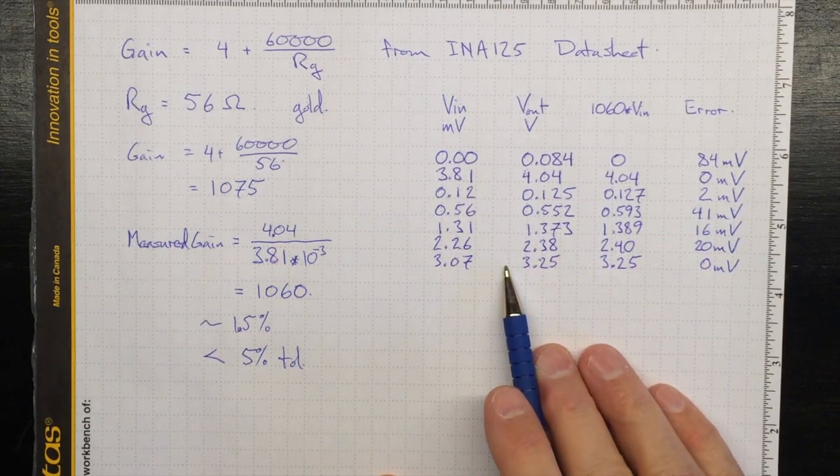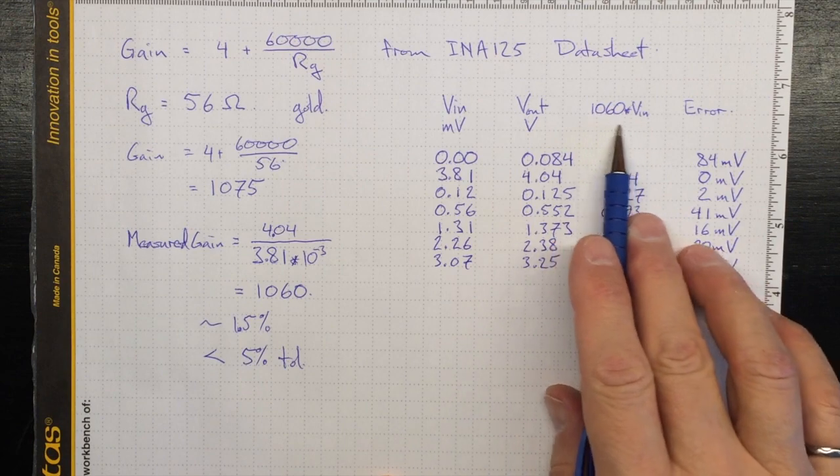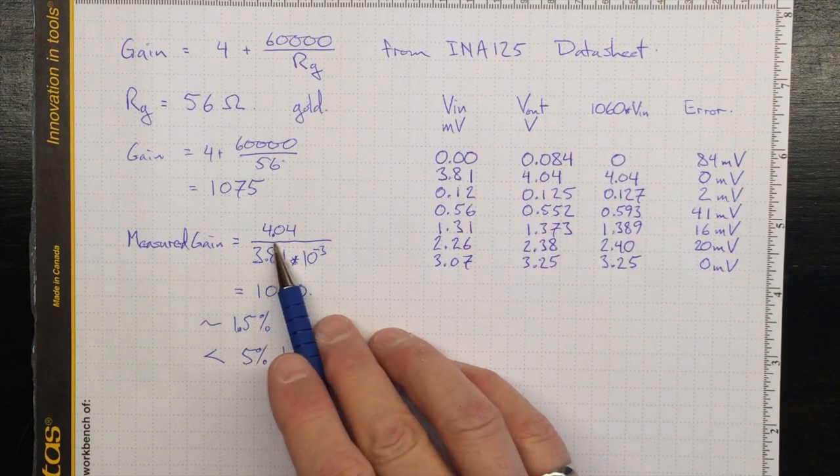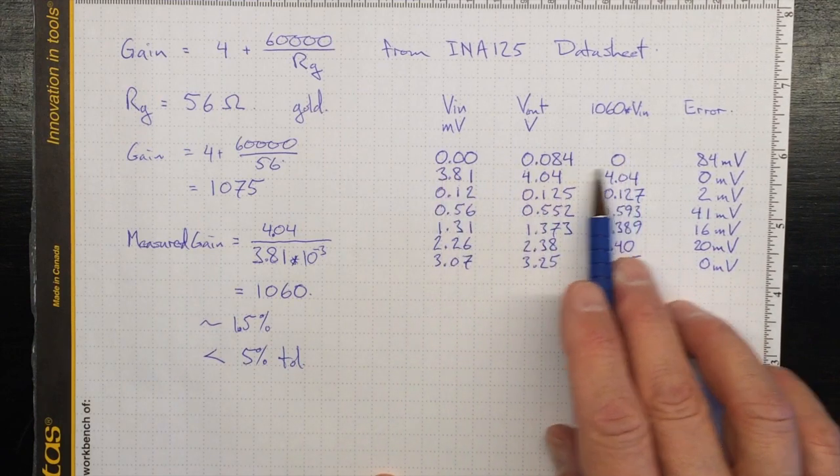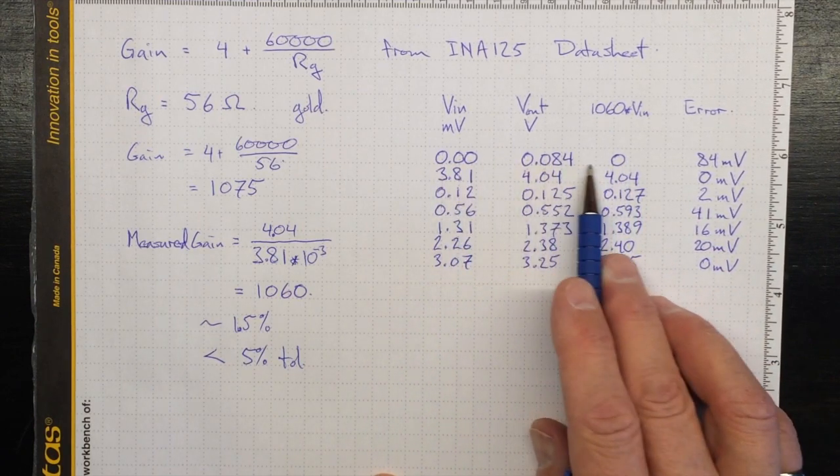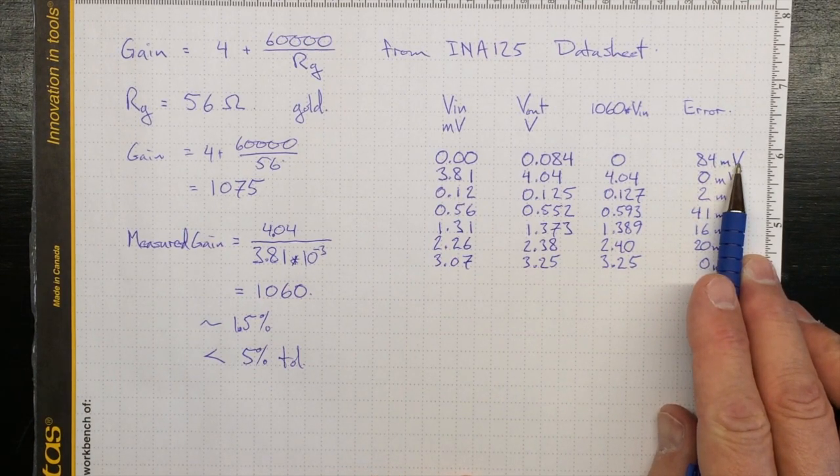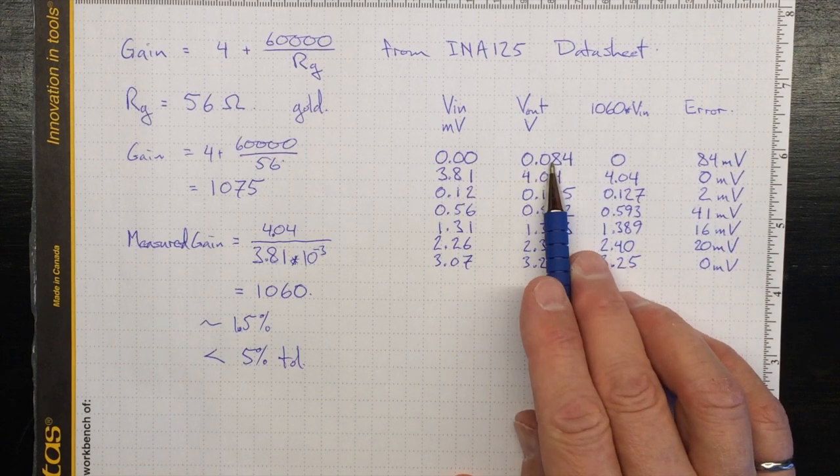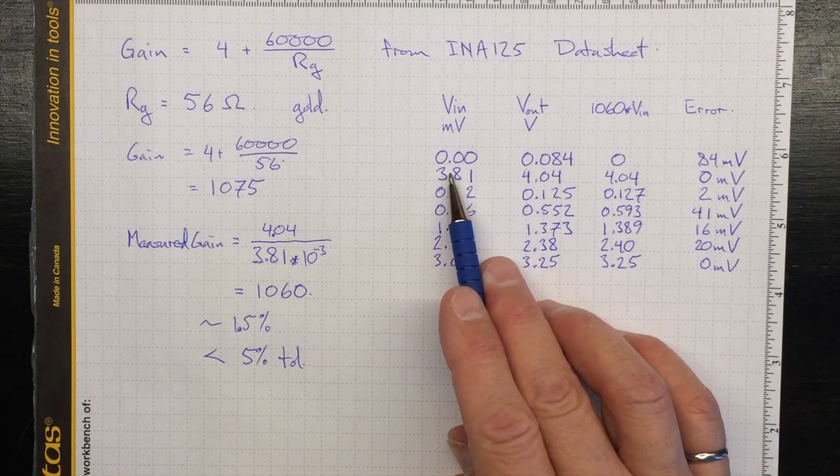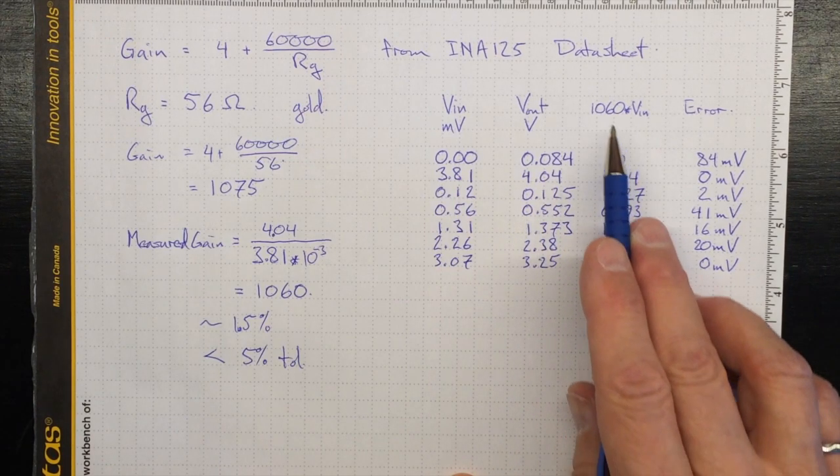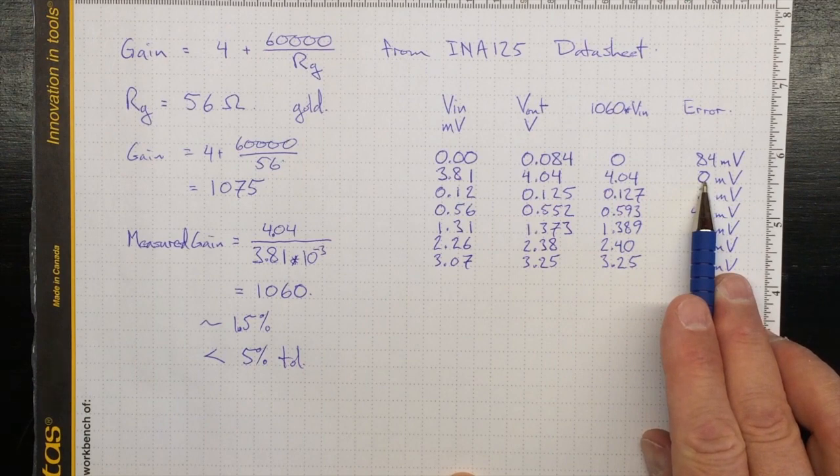If I take some more points here from actual measurements, I can see how well our model of a gain of 1,060 from our measured maximum gain works out. For zero, obviously we're wrong, because zero should be zero, and we're off by 84 millivolts. That's a fairly big problem, right down around zero, because the output of the amplifier will never get to quite zero volts. 3.81 and 4.04, that was the basis of our calibration for 1,060 gain, so of course, there's no error there.